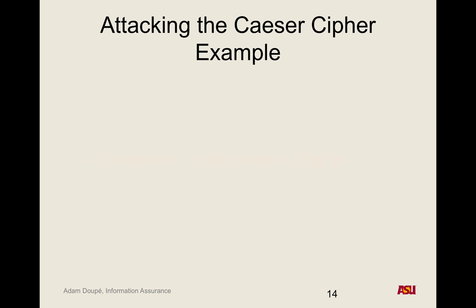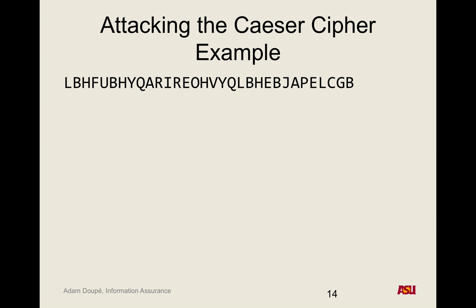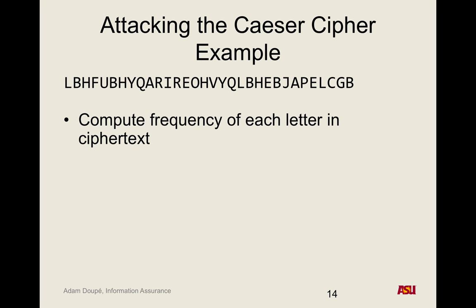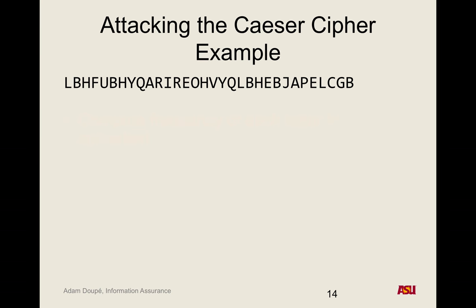Caesar cipher: if the key is 3, then 'hello world' would encrypt to a specific shifted string. We already attacked the Caesar cipher. Why can we try all possible keys? There aren't that many — only 26. Should we extend the English language to get more letters? Maybe include emojis to increase the key space?